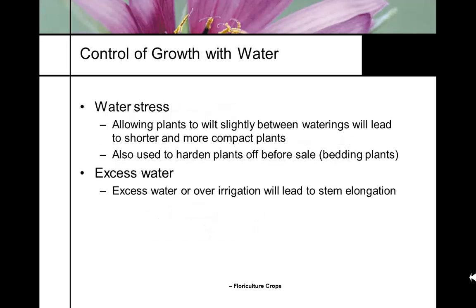Some growers use water stress to make plants grow shorter and more compact, or to harden off their plants. Excess water can be used to increase stem elongation, and in some species a little water stress speeds flowering.